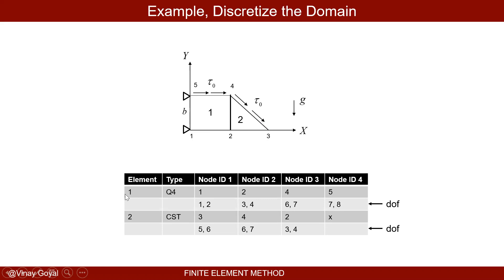For element number one, the node IDs are one, two, four, and five — these are the nodes that comprise element one. Element number two is a constant strain triangular element, which comprises nodes three, four, and two.